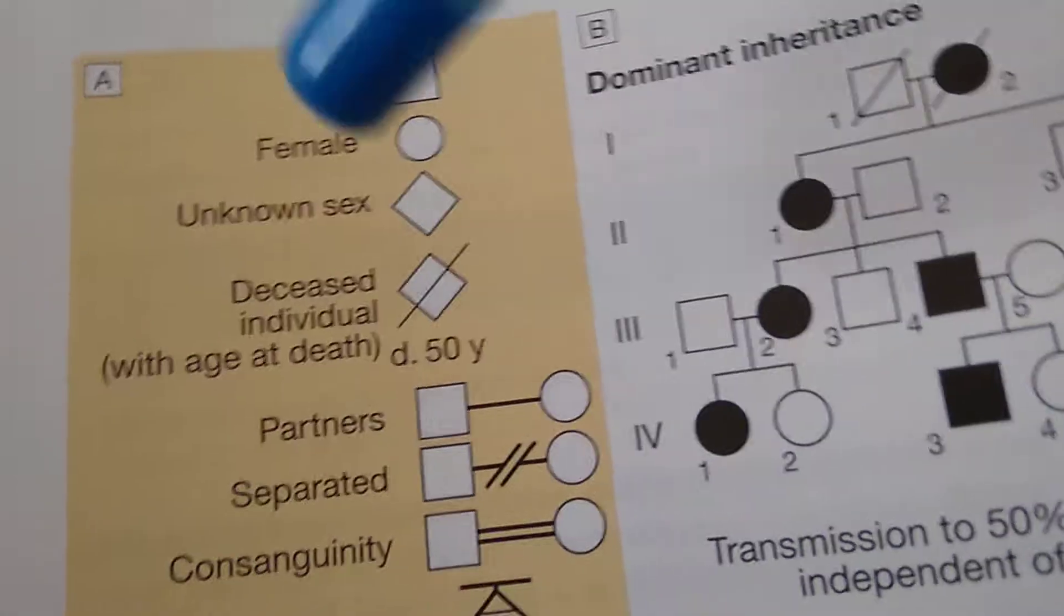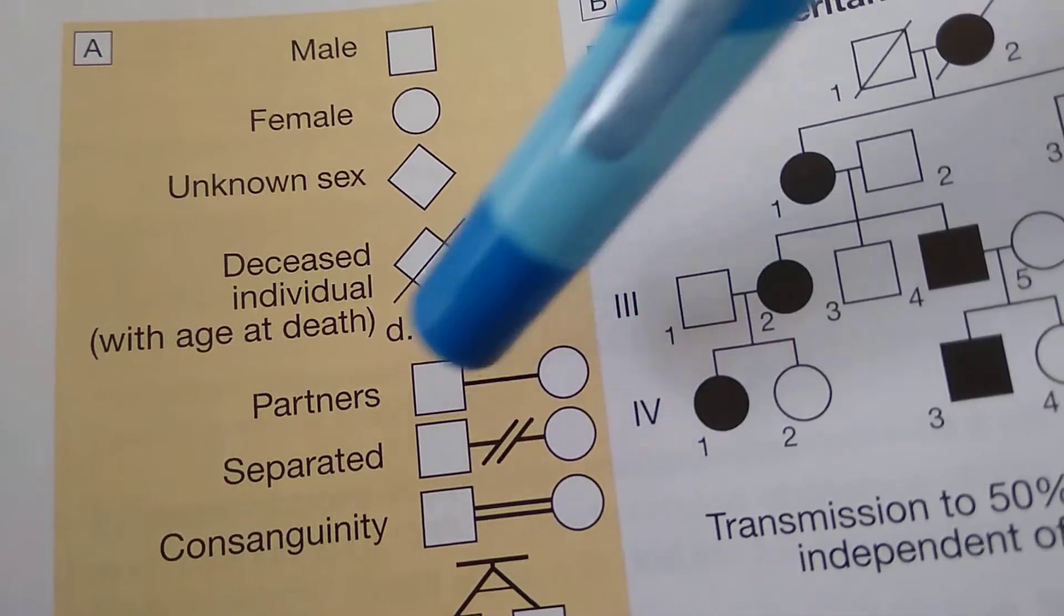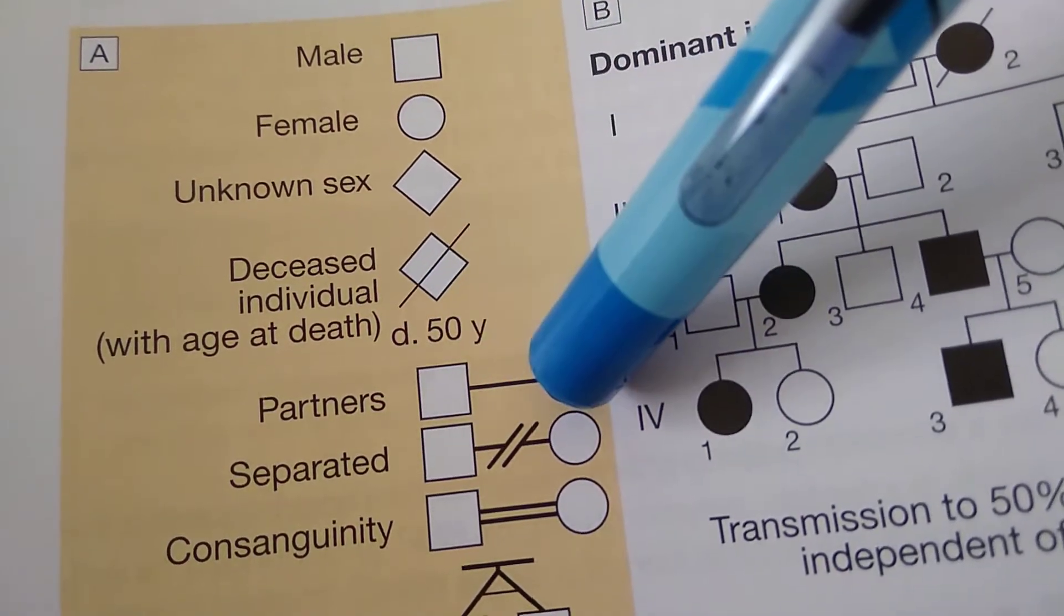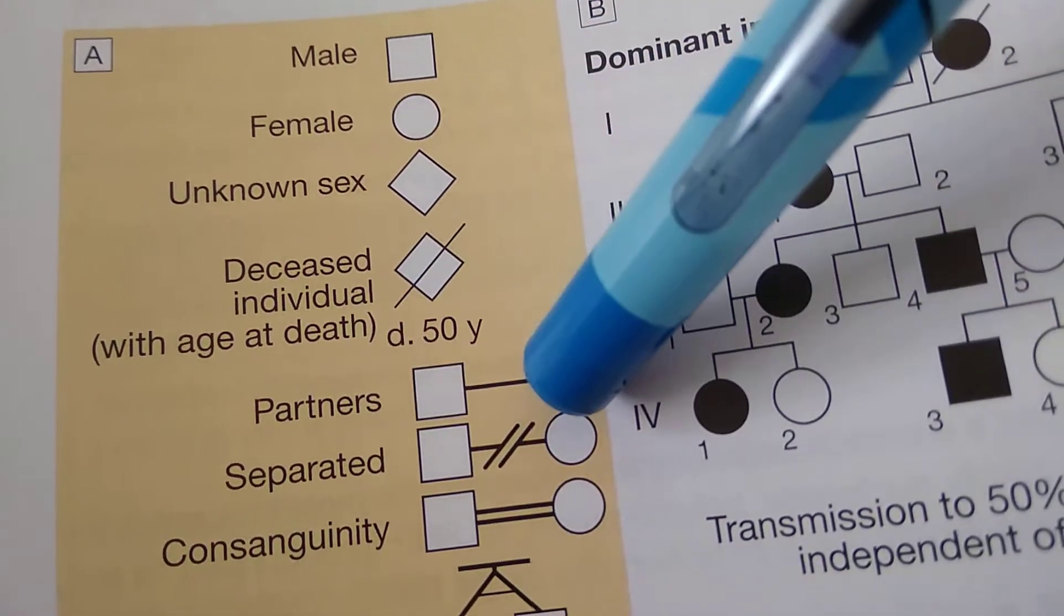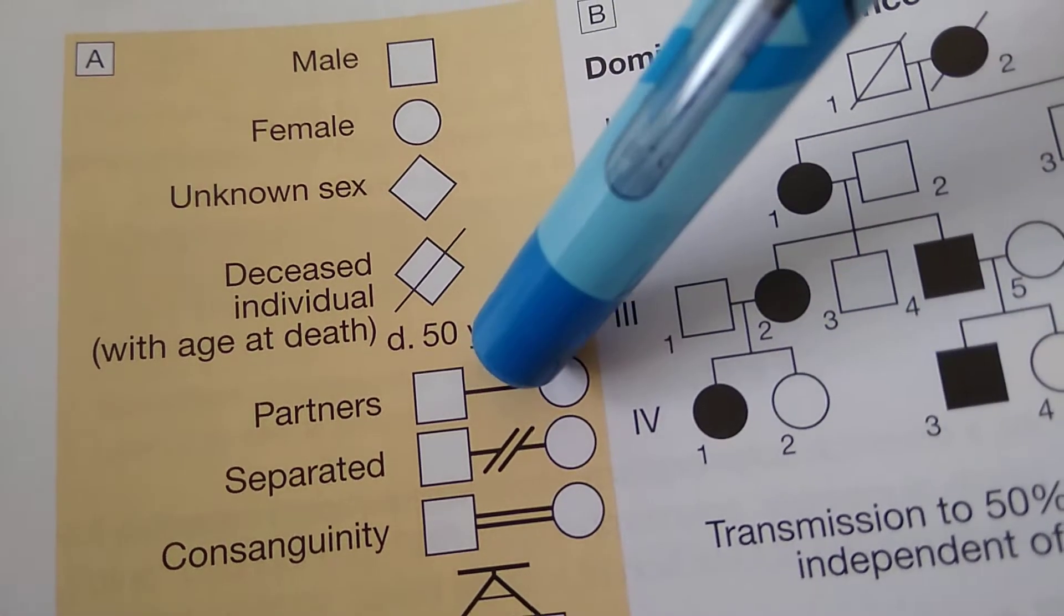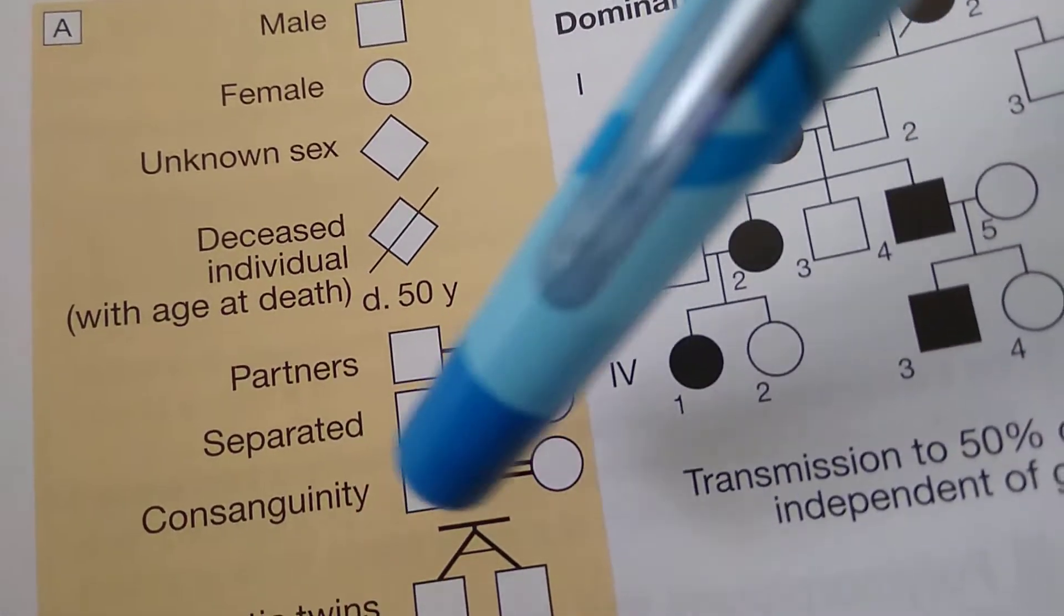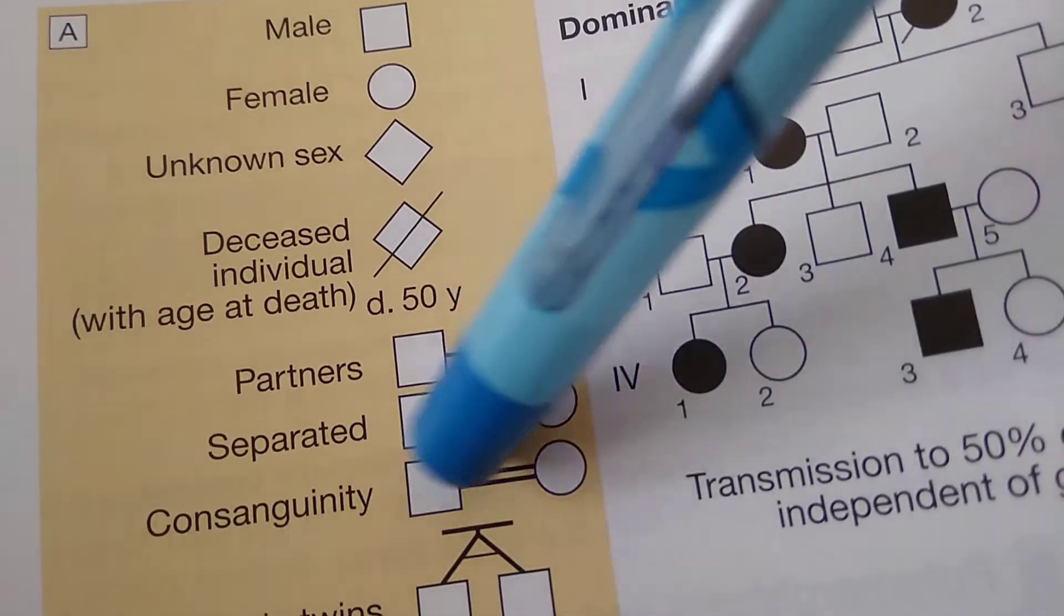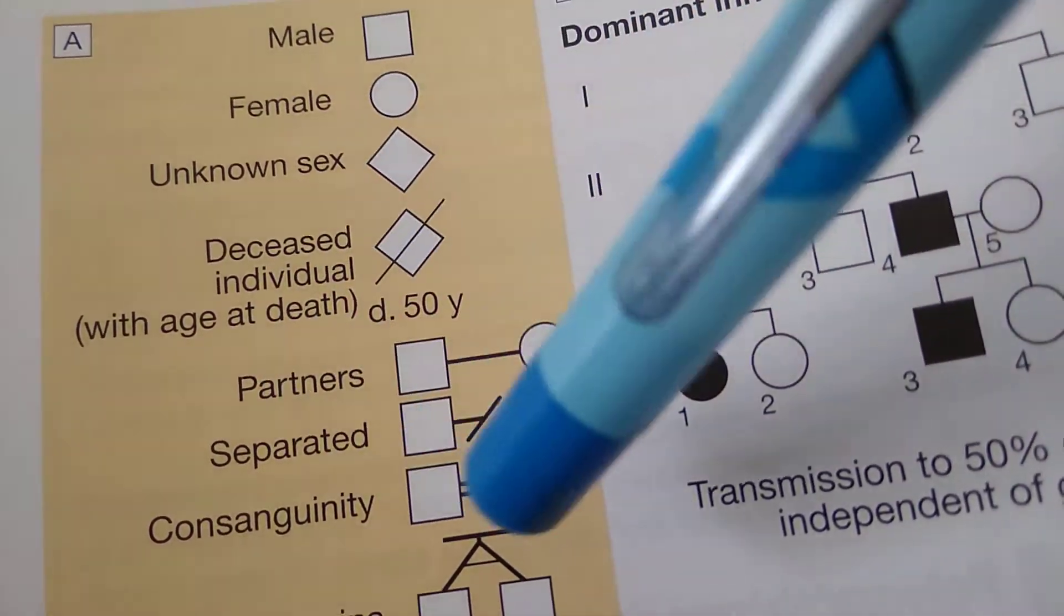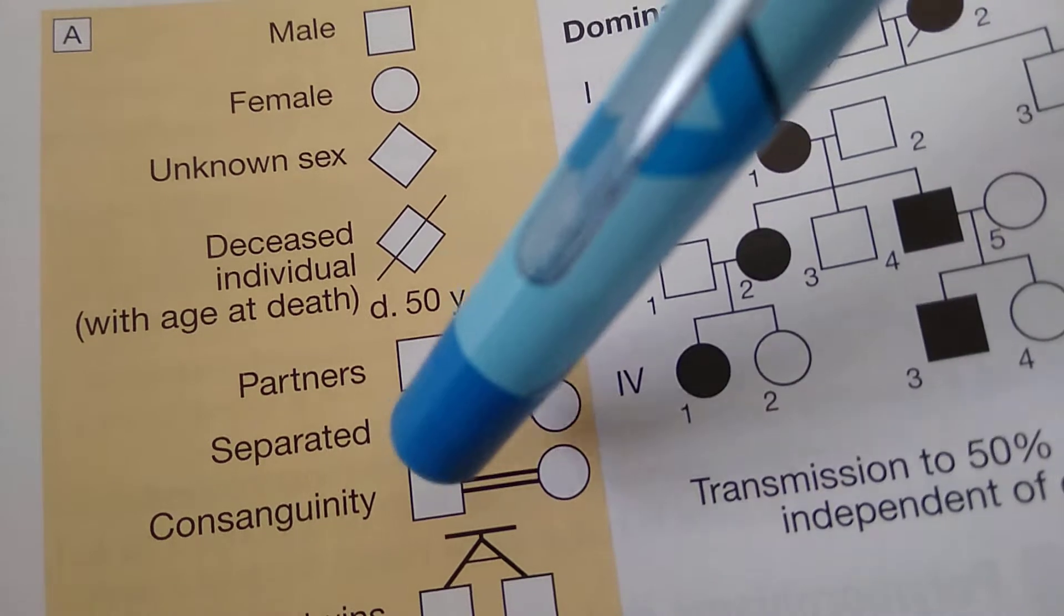Now this is a partner, these people are married or something like that, married or a partner, because marriage doesn't always produce children - even otherwise people can have children. So this is a partner. If it is consanguinity, then there are two lines like this.